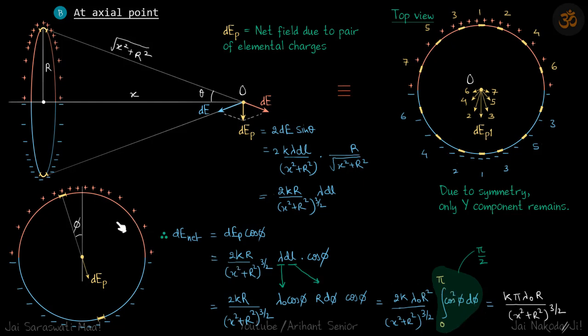We put the limits of phi as 0 to pi. We are not putting 0 to 2 pi because when we are considering pairs, when we start from here and finish here, because of pairing of the elemental charges, the whole ring will be covered. That's why the limits are from 0 to pi. This is standard result for cos squared phi d phi 0 to pi is pi by 2, which gives our answer.